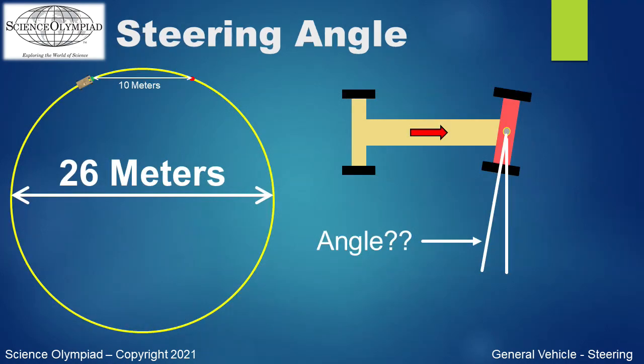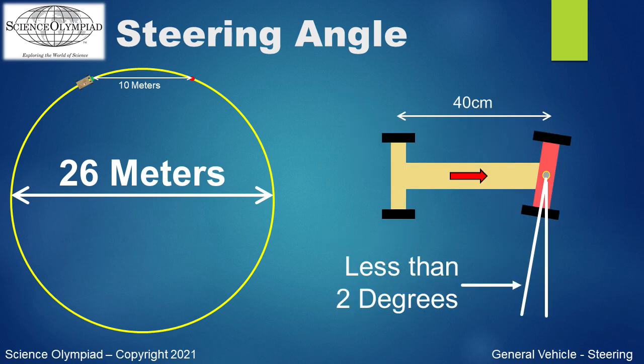Okay, knowing the vehicle's path is a circle with a diameter of 26 meters, any idea on how many degrees the front axle should be rotated to travel this path? Are you thinking 10 degrees, 5 degrees, or some other number? If you were thinking less than 2 degrees, then you had the right idea.